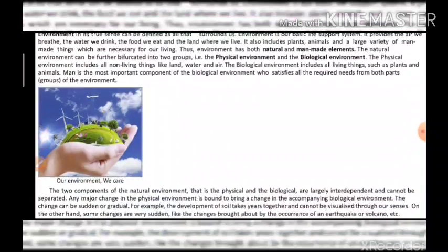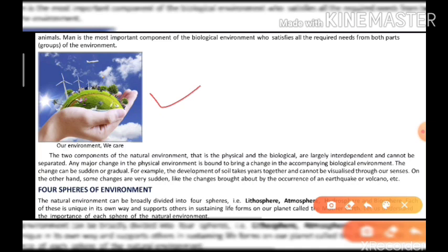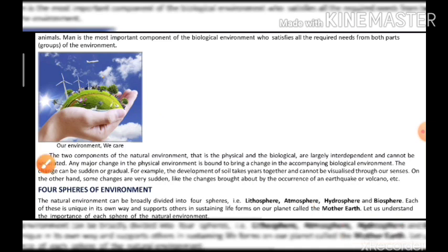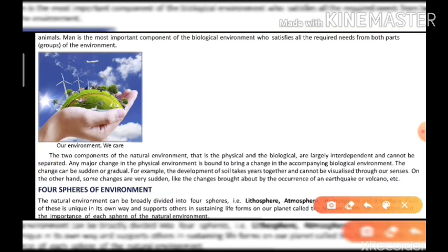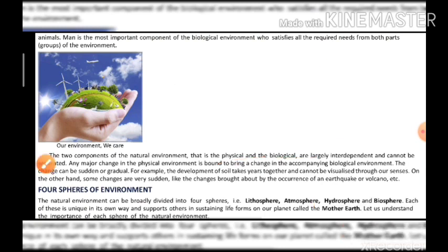The two components of the natural environment — physical and biological — are largely interdependent and cannot be separated. Both physical and biological components depend on each other. If the physical environment changes, automatically the biological environment also changes.